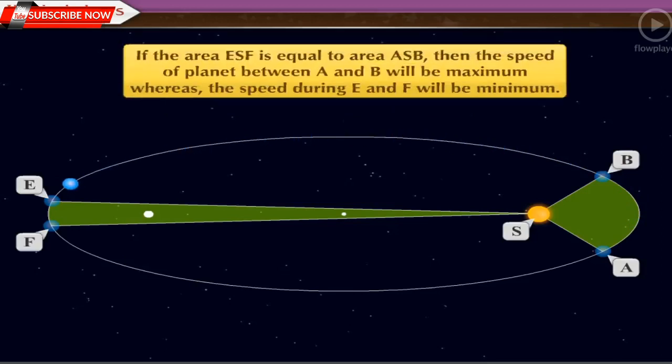If the area ESF is equal to area ASB, then the speed of planet between A and B will be maximum, whereas the speed during E and F will be minimum.